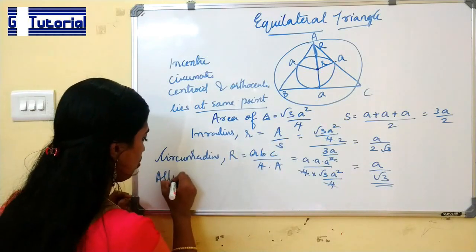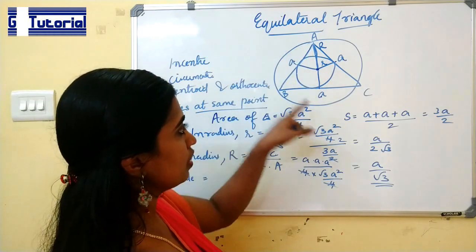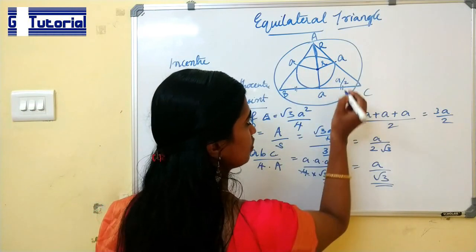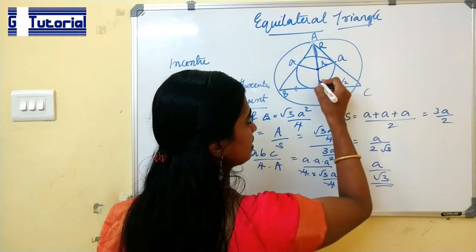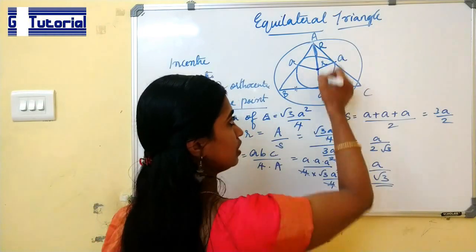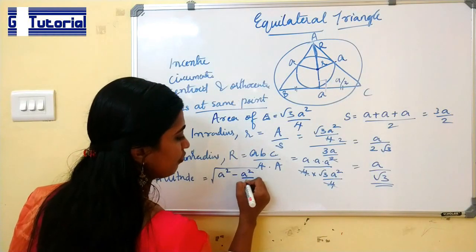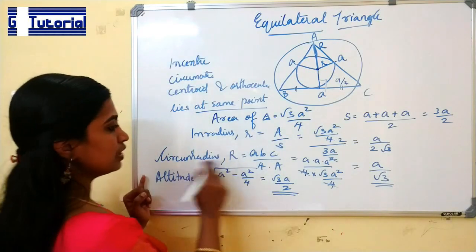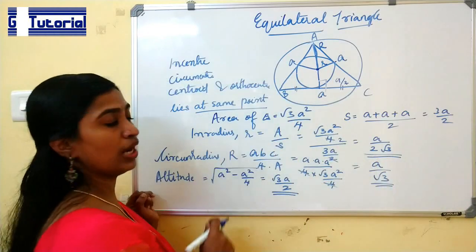For the altitude of an equilateral triangle: the altitude divides the base in half, so the base becomes a/2. Using the Pythagorean theorem, altitude = √(a² − (a/2)²) = √(a² − a²/4) = √(3a²/4) = (√3 × a) / 2. So the altitude is (√3a)/2, circumradius is a/√3, and inradius is a/(2√3) for an equilateral triangle.